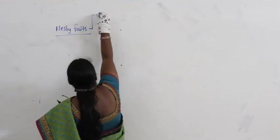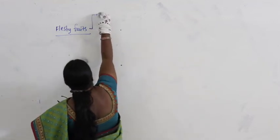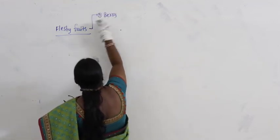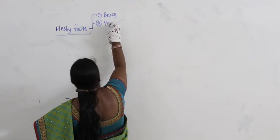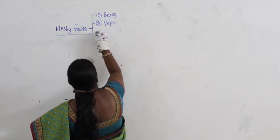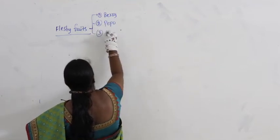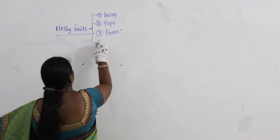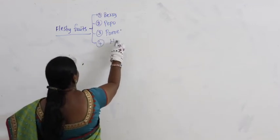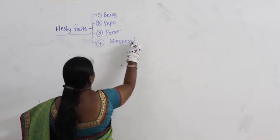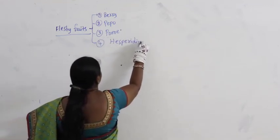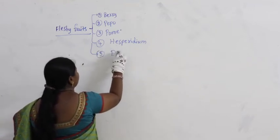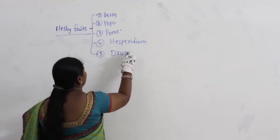What are they? The first one is called berry, next one is pepo, the third one is pome, fourth one is hesperidium, and the fifth one is drupe.